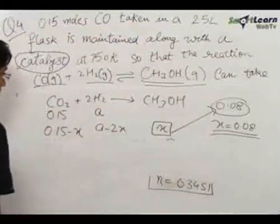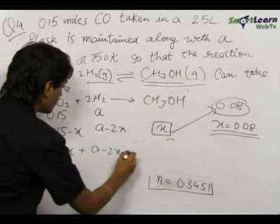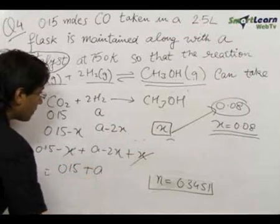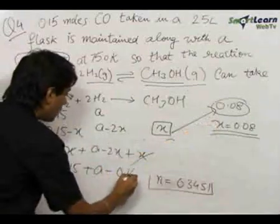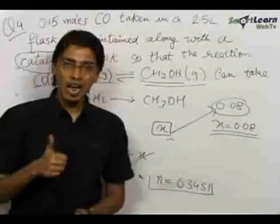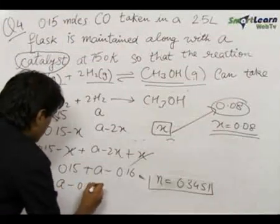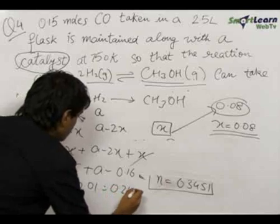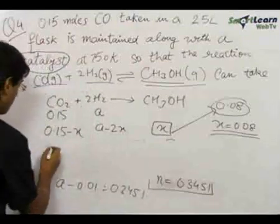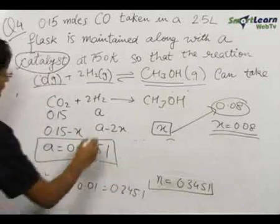We know the total number of moles at equilibrium equals (0.15 − x) + (a − 2x) + x = 0.15 + a − 2x. Substituting x = 0.08: this becomes 0.15 + a − 0.16 = a − 0.01. Setting this equal to 0.3451 (from the ideal gas equation), we get a = 0.3551. This is the initial number of moles of hydrogen.